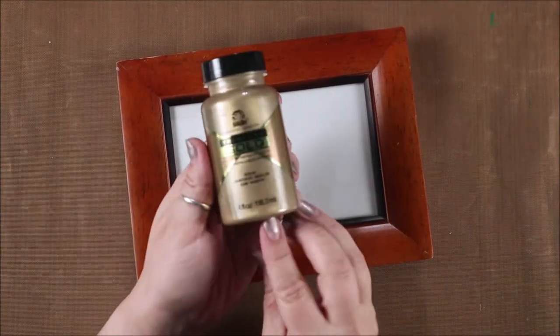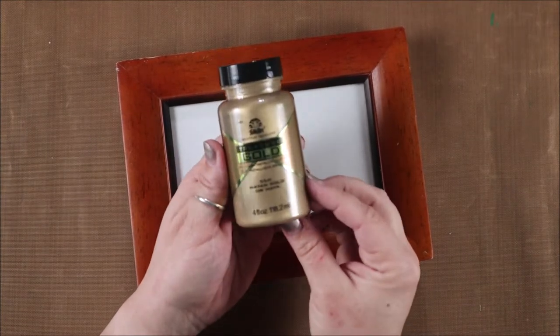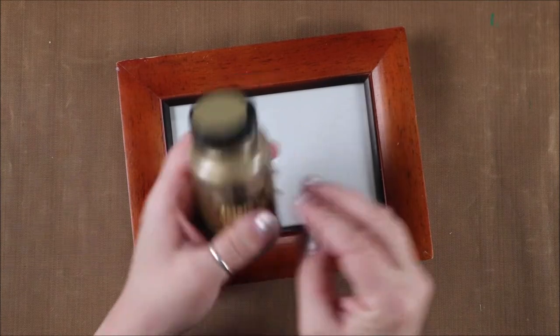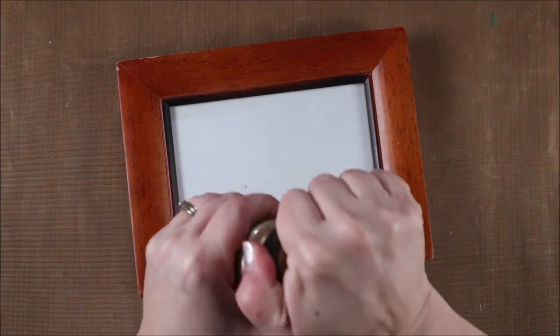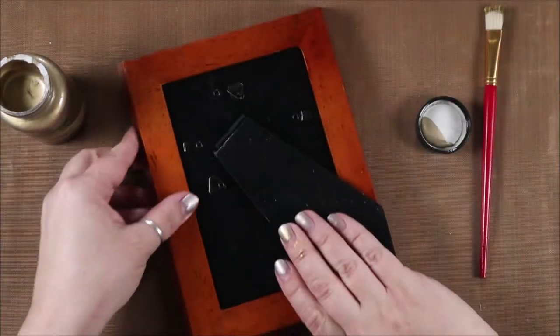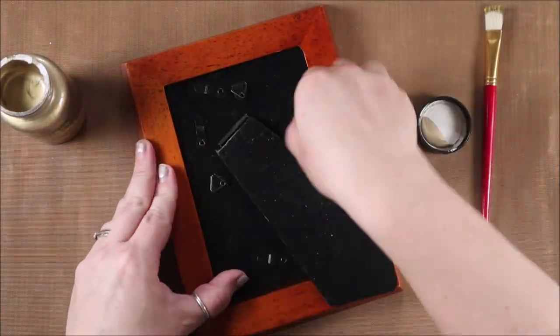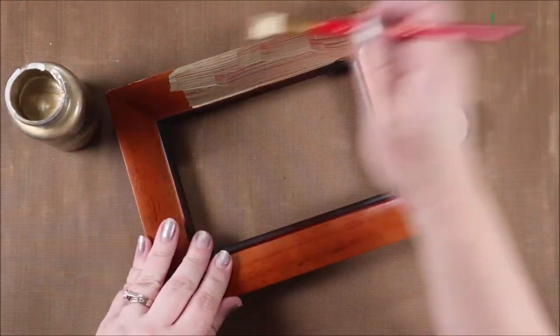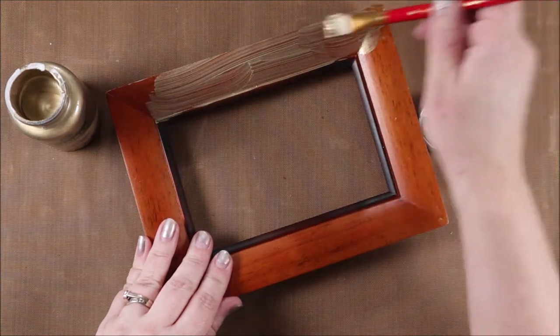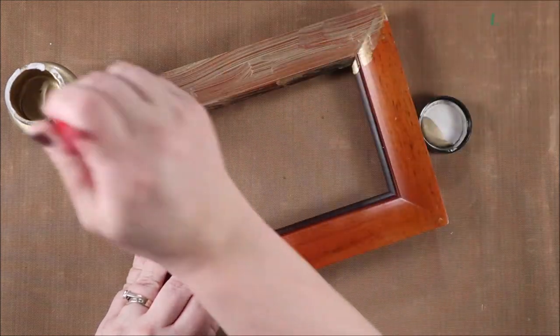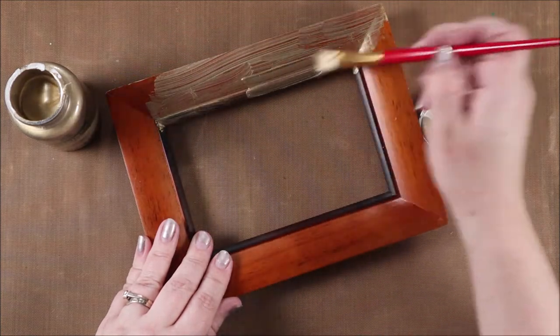The first step is we are going to paint this with the new treasure gold paint from Plaid. This is a folk art paint that is absolutely gorgeous. I'm just going to dip straight into the jar here and go ahead and paint. The first step is I want to take off the backing. This is a great project where you can upcycle your frames. You may have a ton of frames laying around. This is also a great way to glam up your frames and make them a little bit cooler.